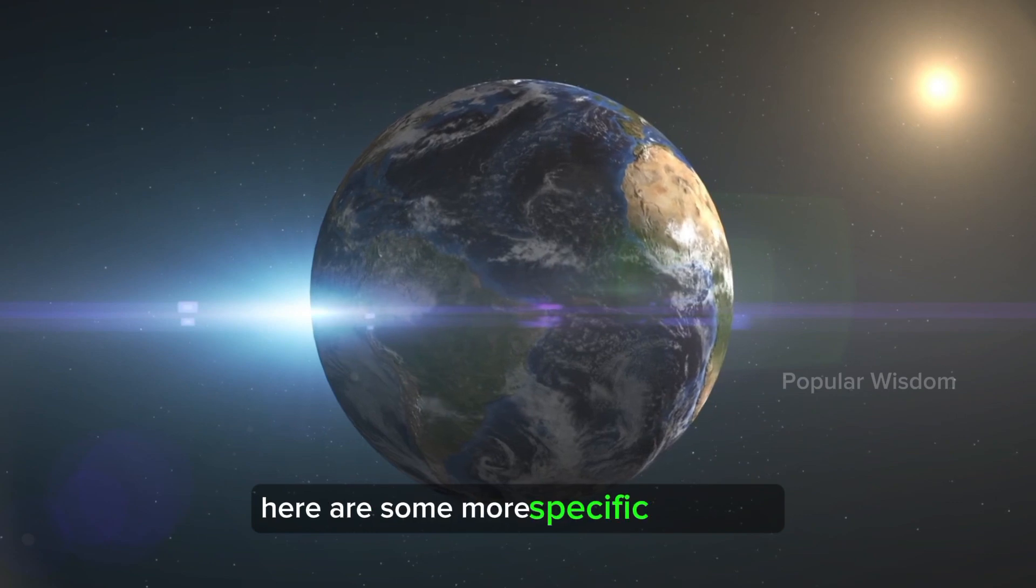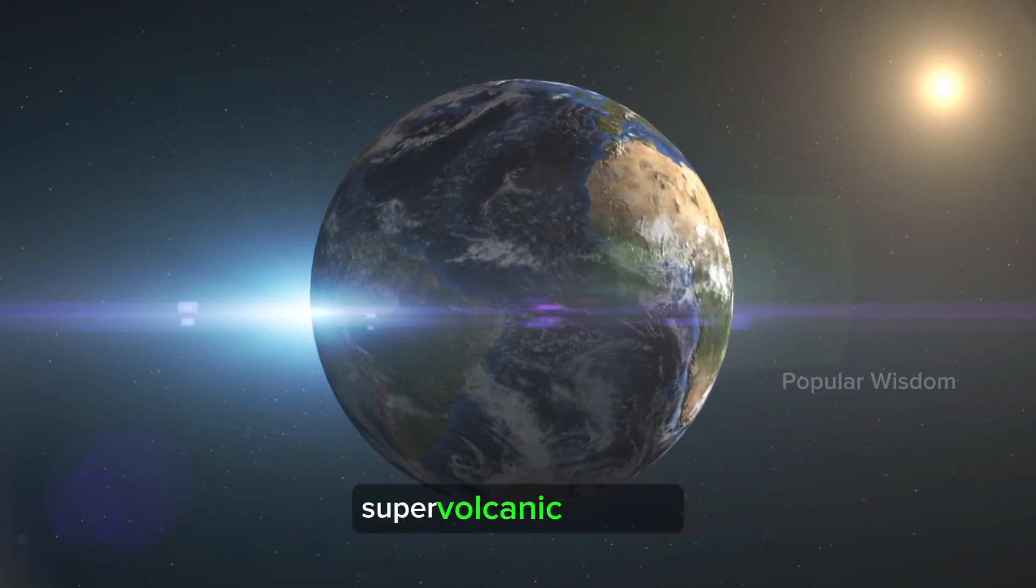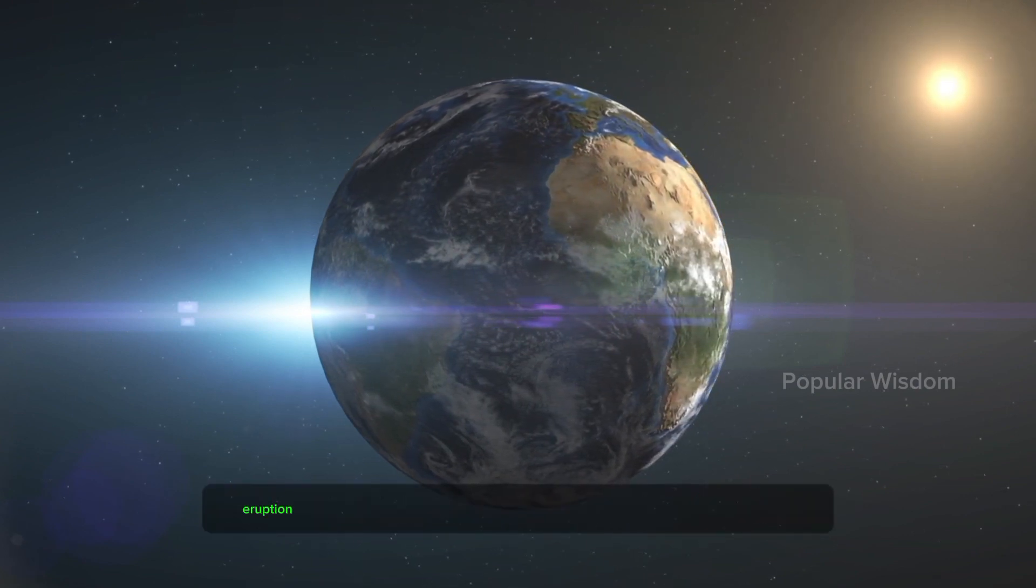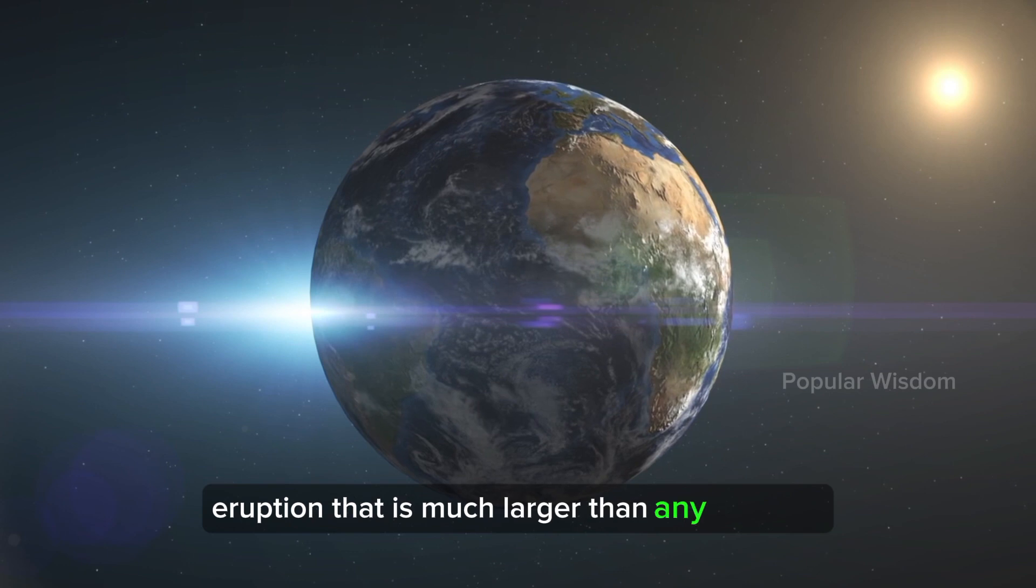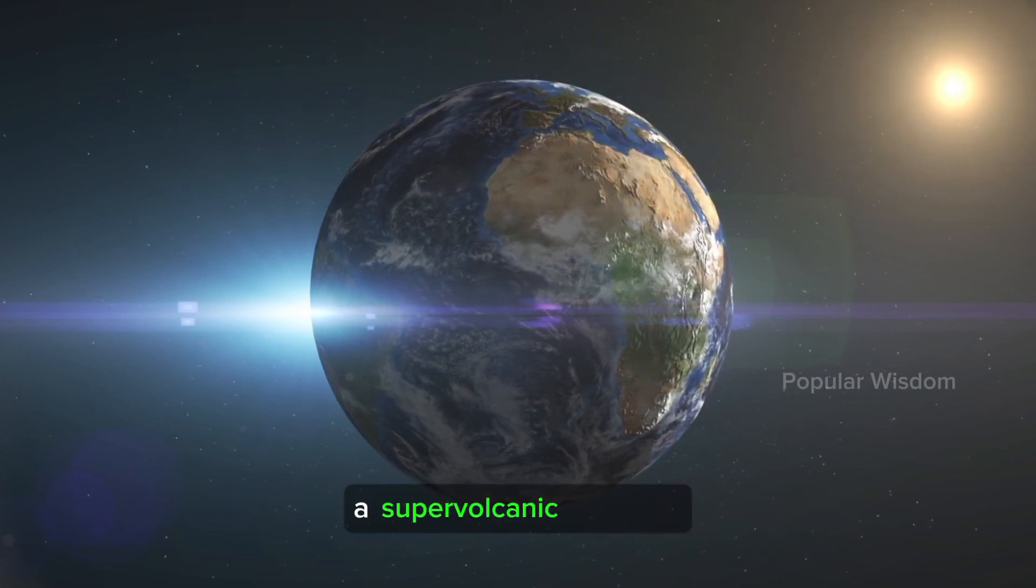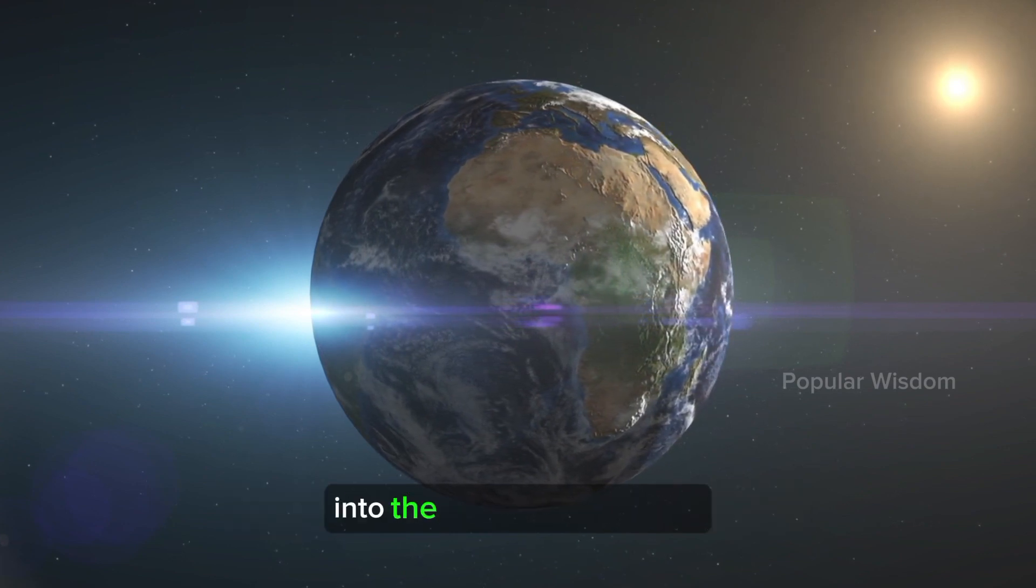Here are some more specific scenarios for how the Earth could be destroyed. Supervolcanic eruption: A supervolcanic eruption is a volcanic eruption that is much larger than any eruption that has occurred in recorded history. A supervolcanic eruption could release enough ash and sulfur dioxide into the atmosphere to cool the Earth's climate and cause a global extinction event.